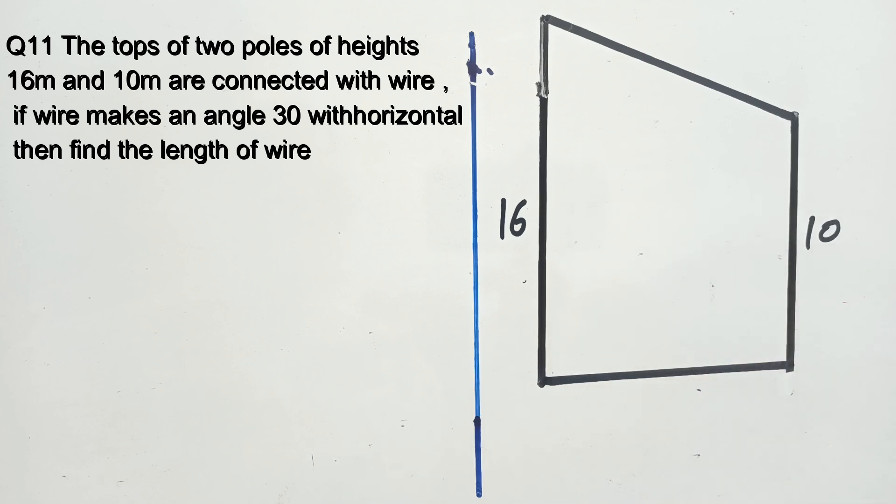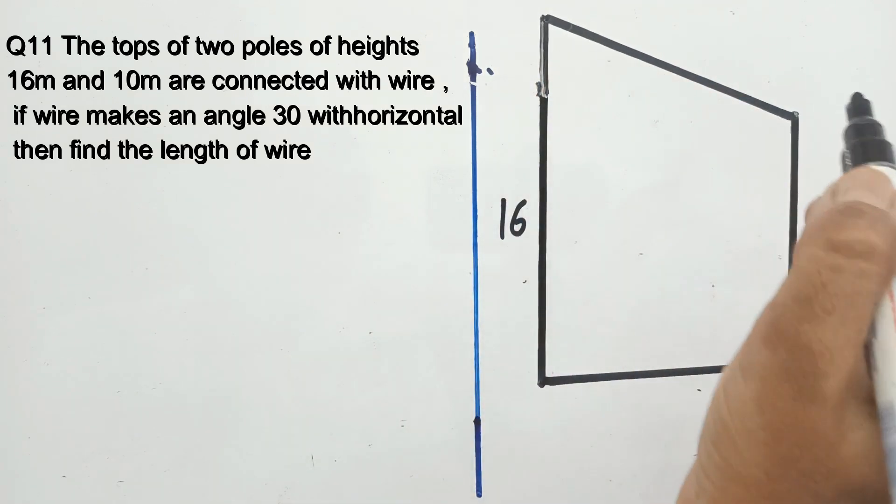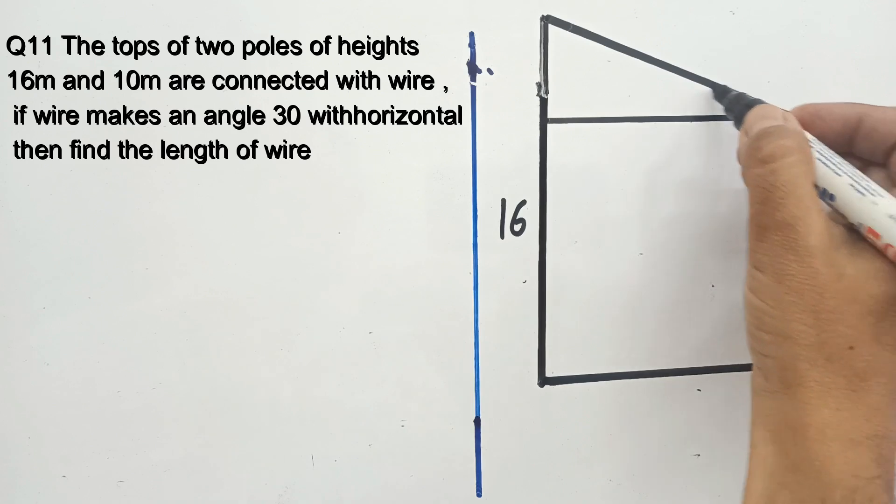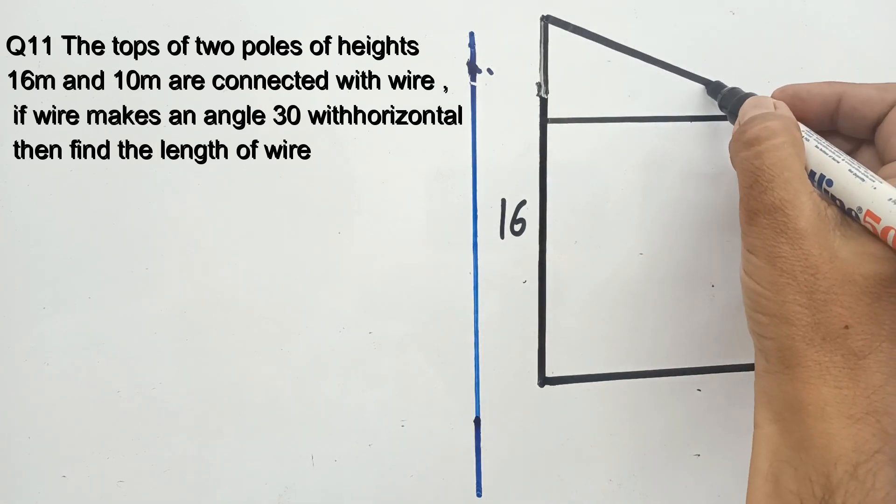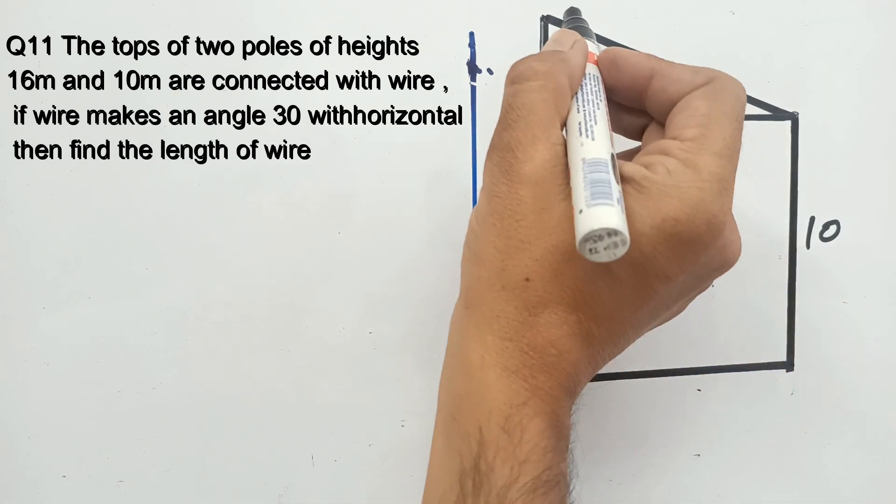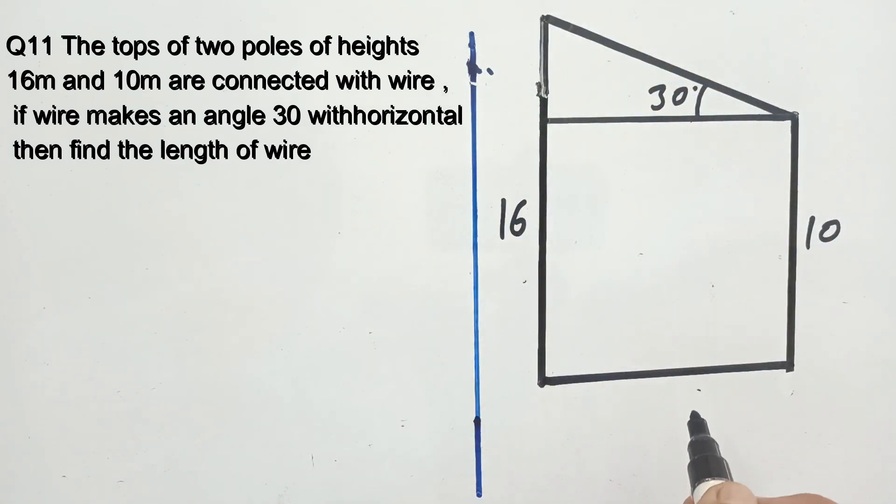This is a pole of height 10 meters that is connected with the wire. It is given in the question that the wire makes an angle of 30 degrees with the horizontal. We need to find the length of the wire.